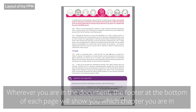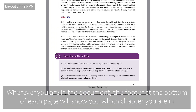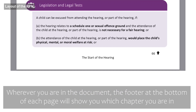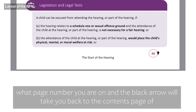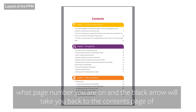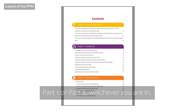Wherever you are in the document, the footer at the bottom of each page will show you which chapter you are in, what page number you are on, and the black arrow will take you to the contents page of part one or part two, whichever you are in.